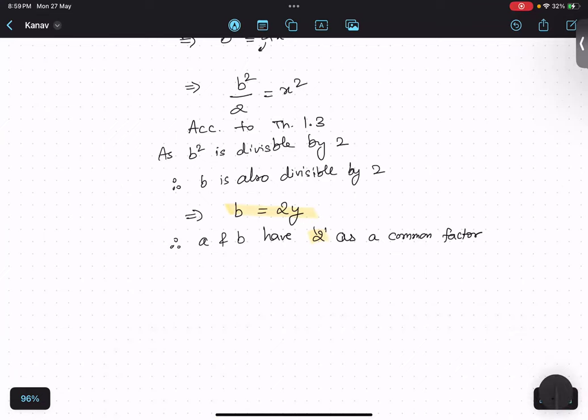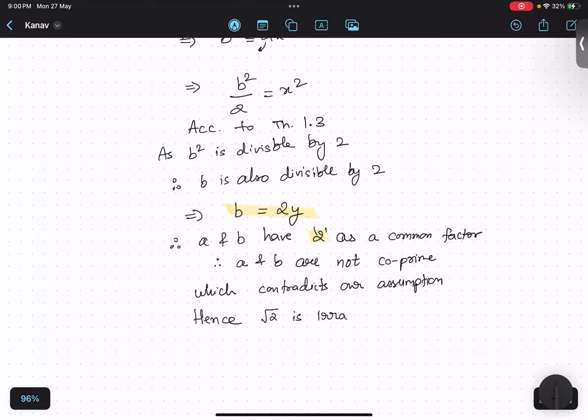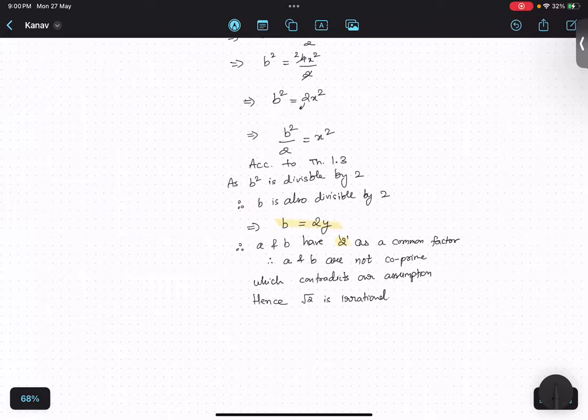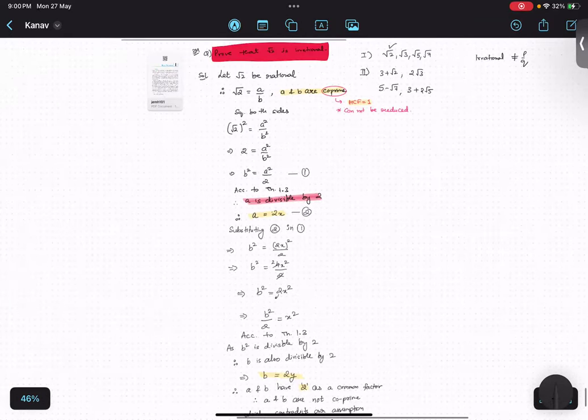A and B have 2 as a common factor. Therefore, A and B are not coprime, which contradicts our assumption. Is that thing clear? Hence, root 2 is irrational. So, that is the proof for this thing.